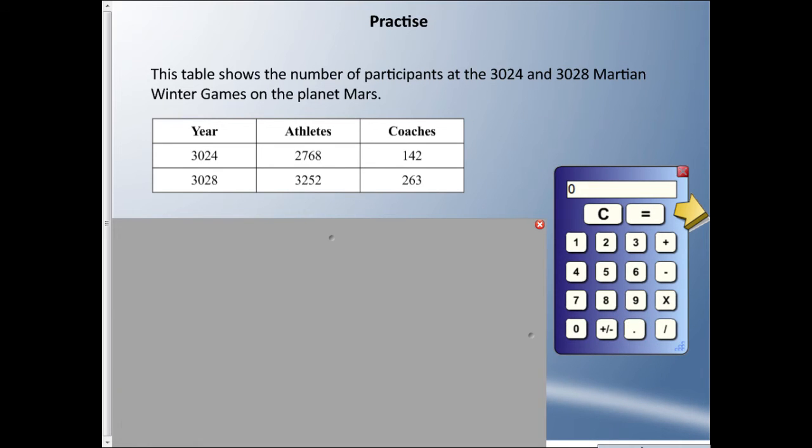Let's do some practice questions. Let's say there are Olympic Games in the years 3024 and 3028, the Martian Winter Games on the planet Mars. I have a table here with the years, number of athletes that participated on Mars, and the number of coaches that went with them.